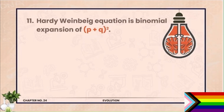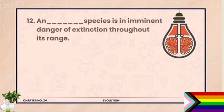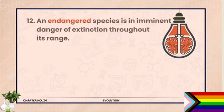Question 12. An endangered species is in imminent danger of extinction throughout its range. Endangered species ko khatra hota hai ki wo aage extinction ki taraf ja rhi hoti hai. And a threatened species woh hoti hai jis ko khatra hota hai ki wo endangered benne ja rhi hai.